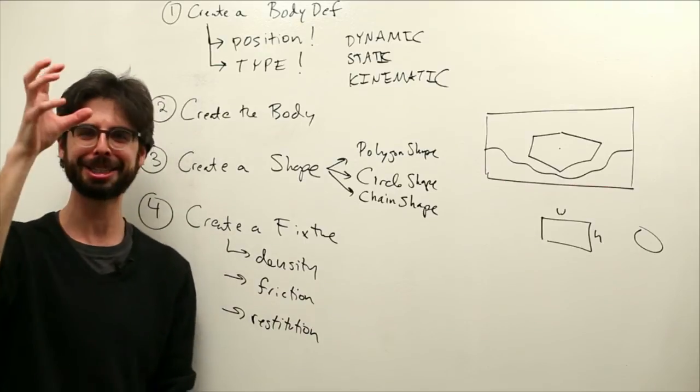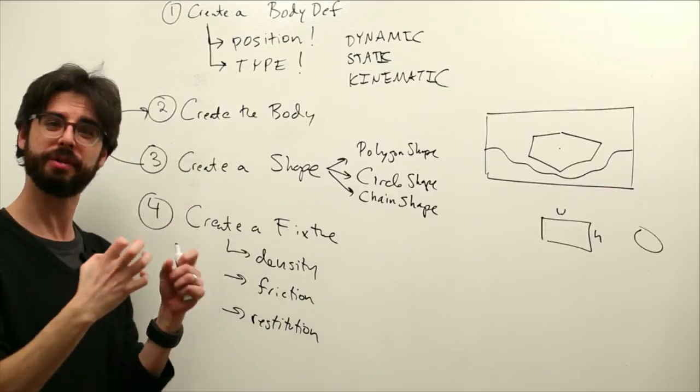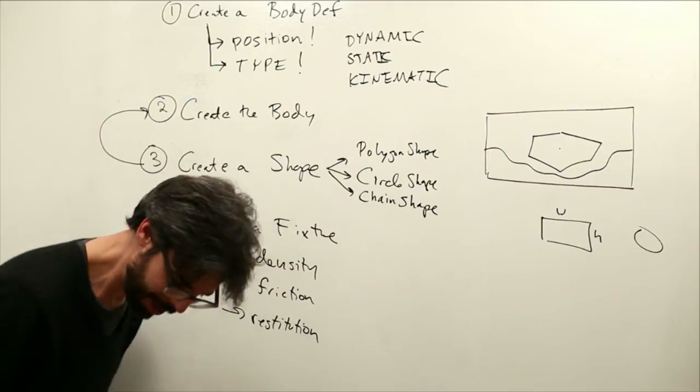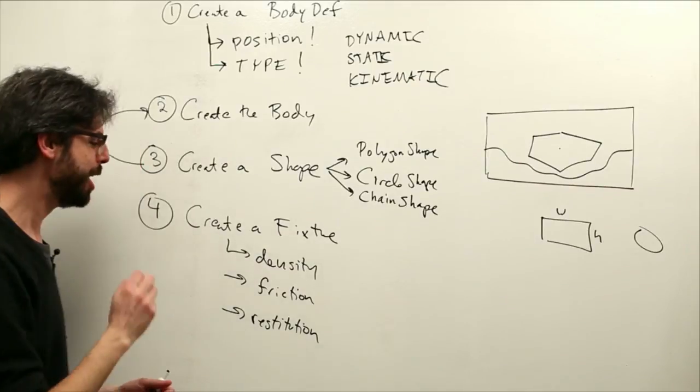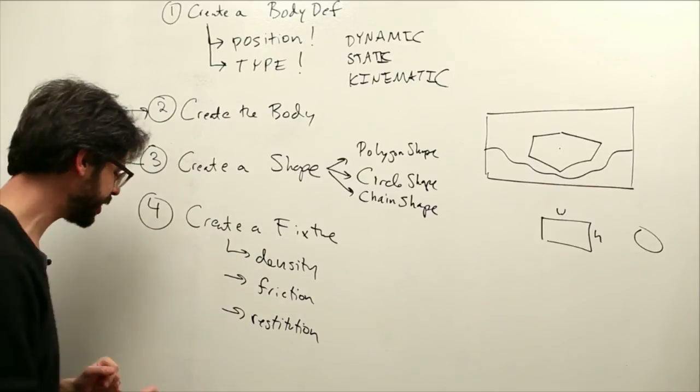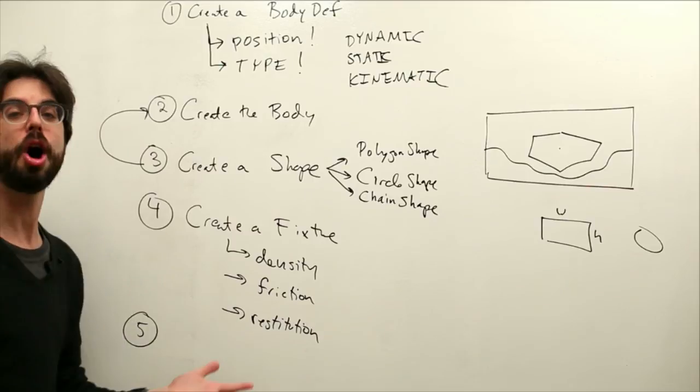And restitution you can think of as elasticity or bounciness. So if you're dropping, if I had a nice little basketball or something, and I were to drop it, how much would it bounce off the floor? Versus how much would it sort of just land with a thud and not bounce back up? Okay, so these are all the parameters we get to define when we create this fixture.